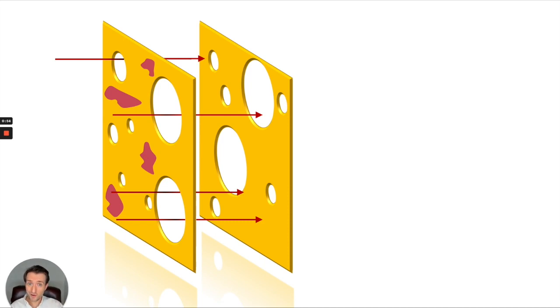But if you have a second layer, that second layer is going to stop some more of the aggressor, especially where there is cheese in one layer and there's no cheese in the other layer. In some cases, the holes are going to be aligned and so the aggressor is going to go through.